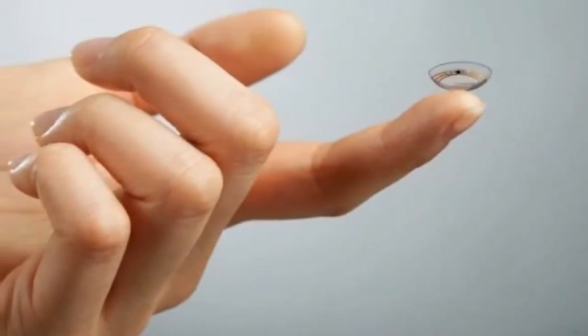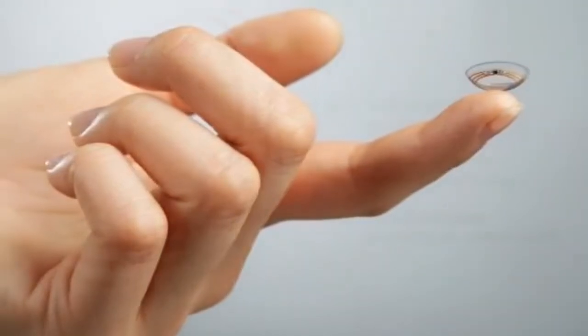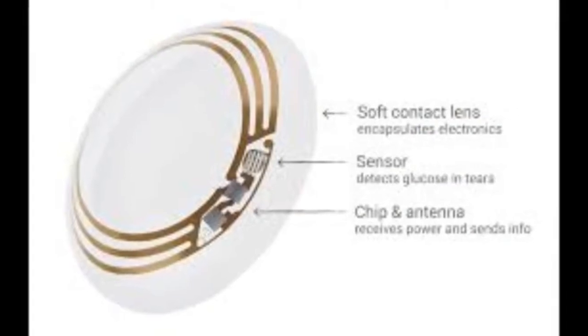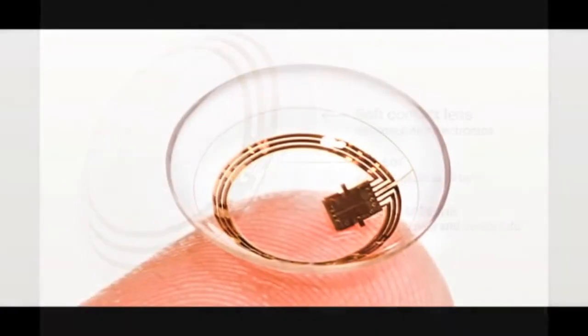Google unveiled on Thursday a contact lens that monitors glucose levels in tears, a potential reprieve for millions of diabetics who have to jab their fingers to draw their own blood as many as 10 times a day.